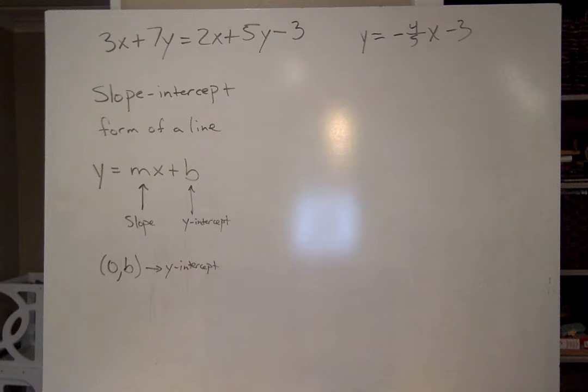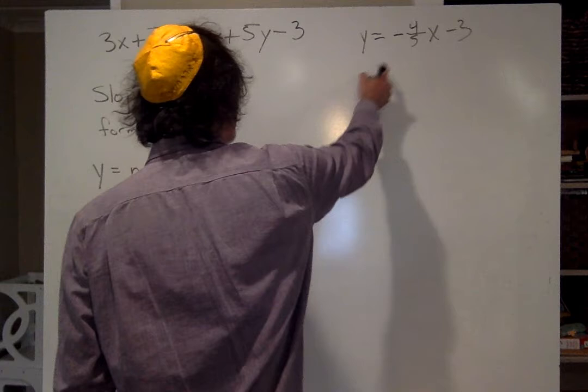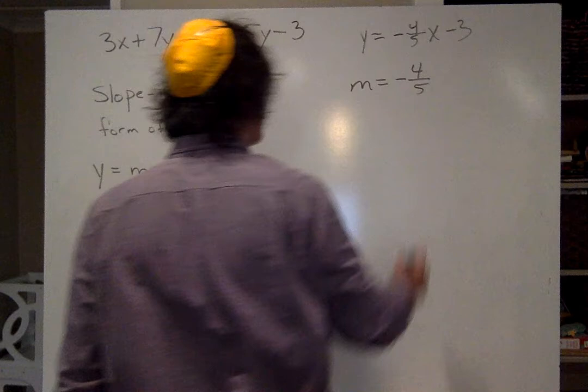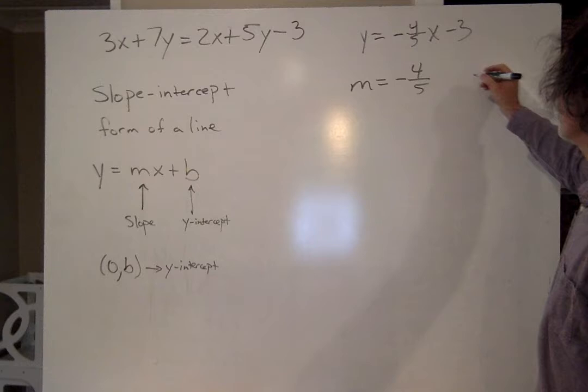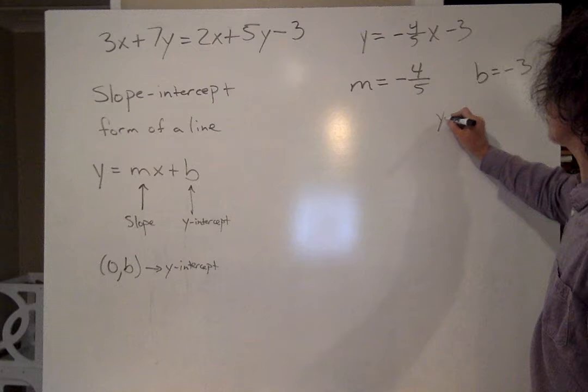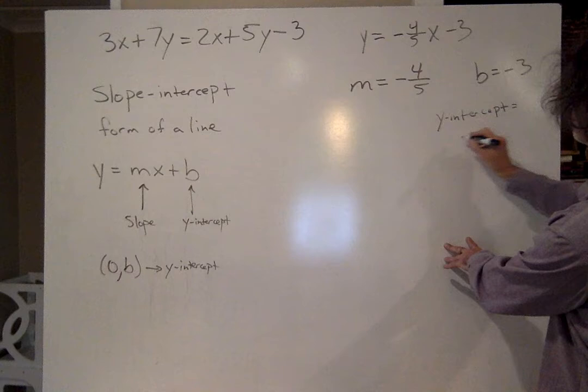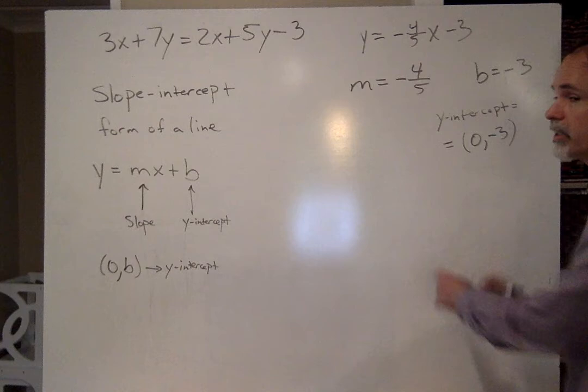Lizelle, tell me, what is the slope? Correct! The slope is just the number in front of x. In this case, minus 4/5. And Estella, what is the y-intercept? Yes, exactly. It's minus 3. So the y-intercept, so b equals minus 3. So the y-intercept is the point 0 comma minus 3. Perfect!